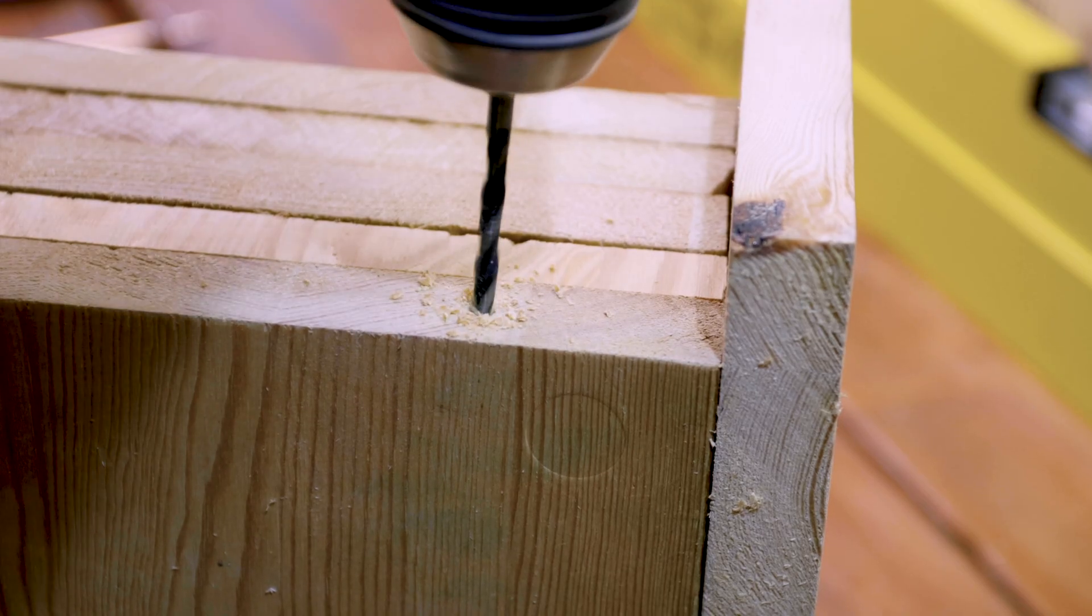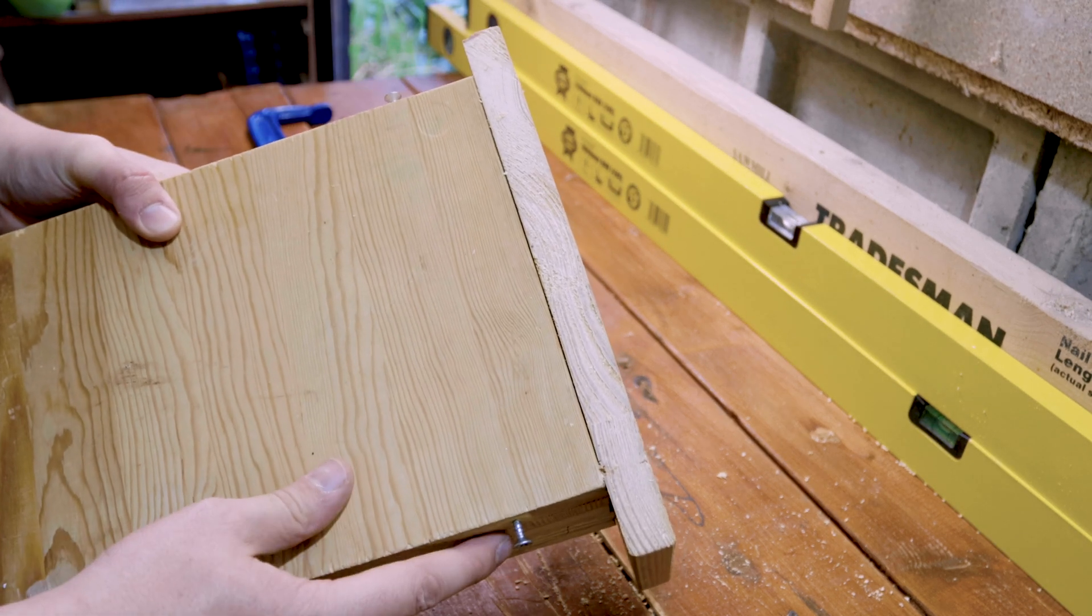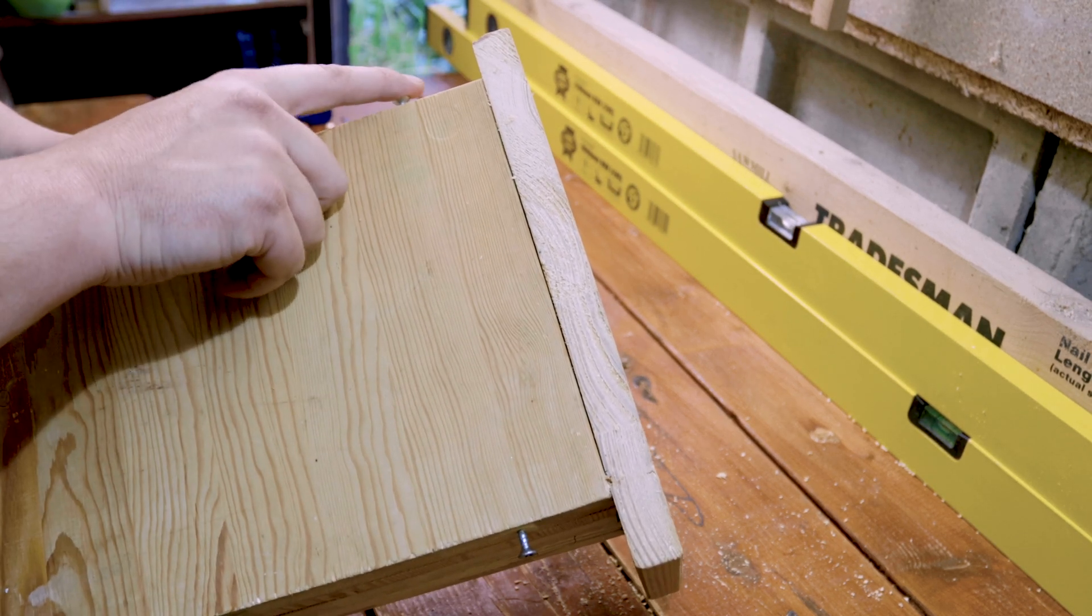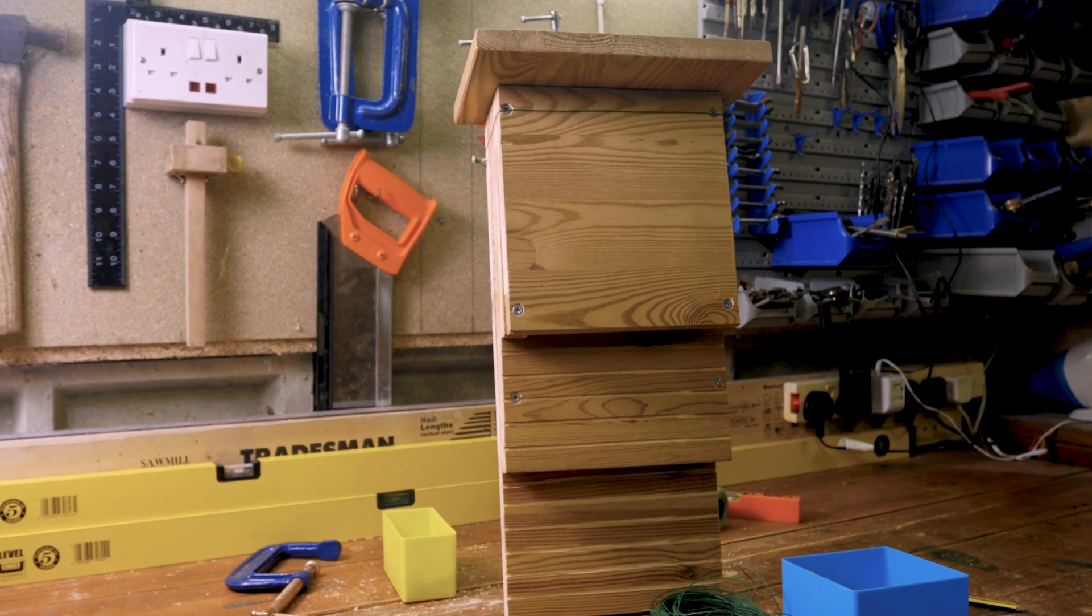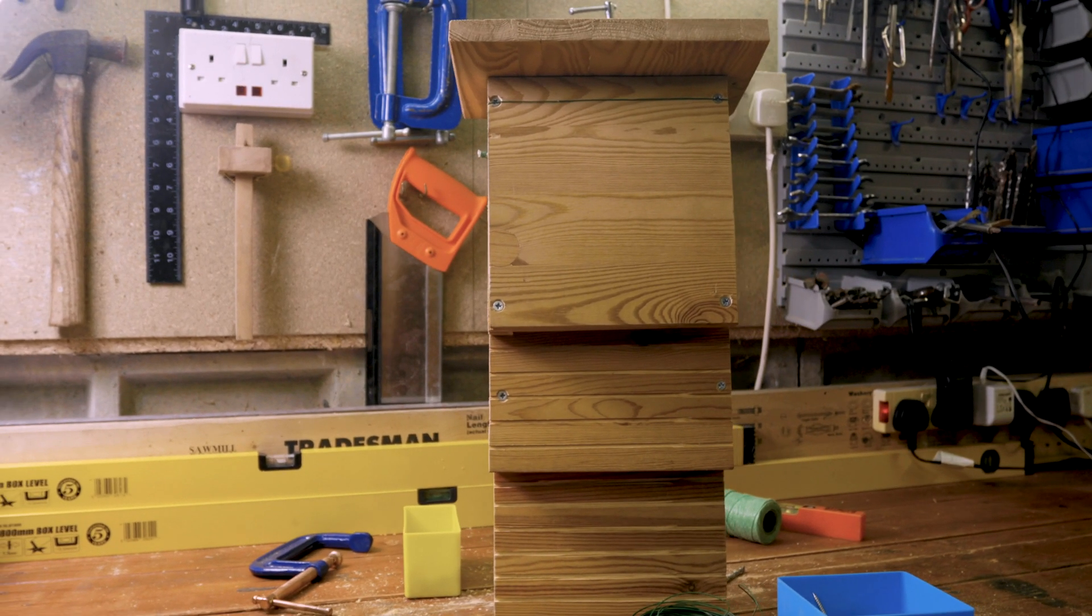The finishing touch are these two screws in the back of the panel. You can wrap wire around these to hang up the box. There you go, you've built a bat home.